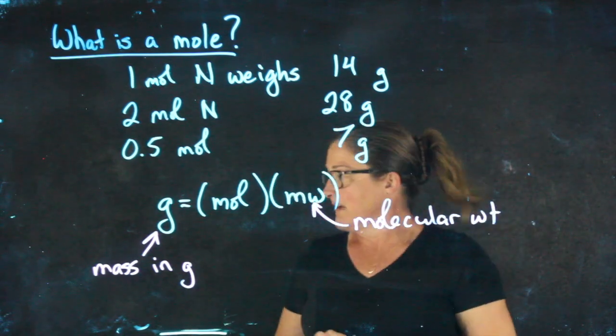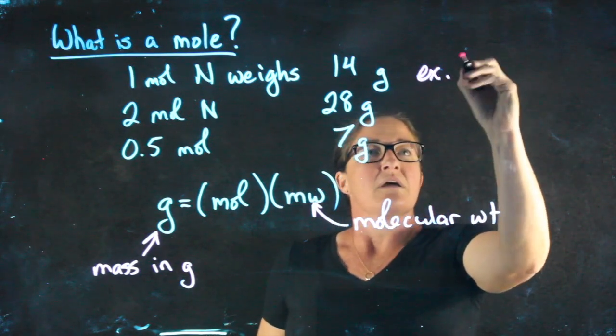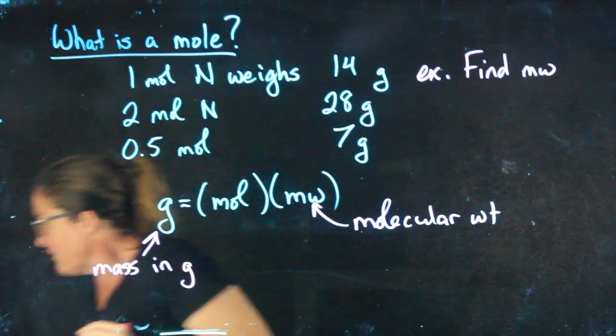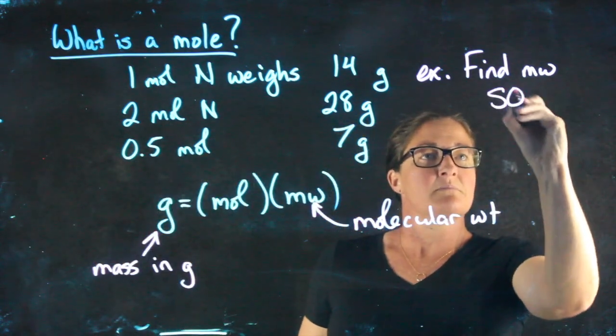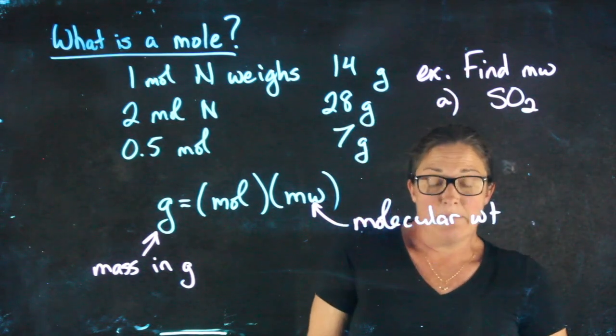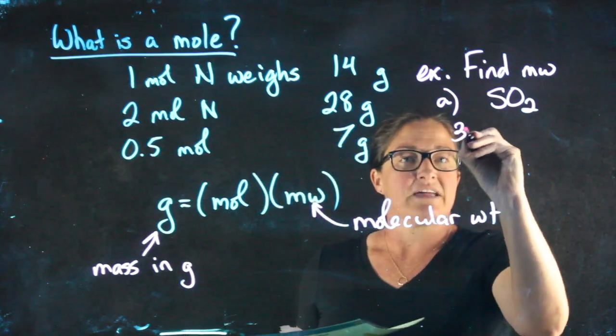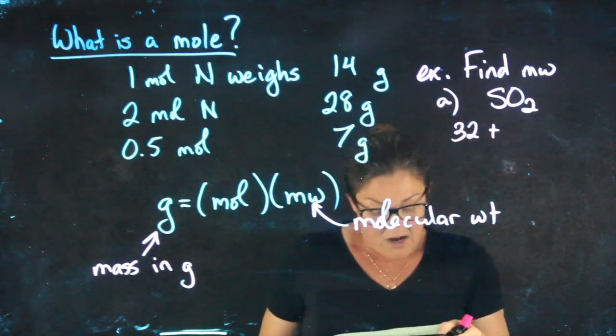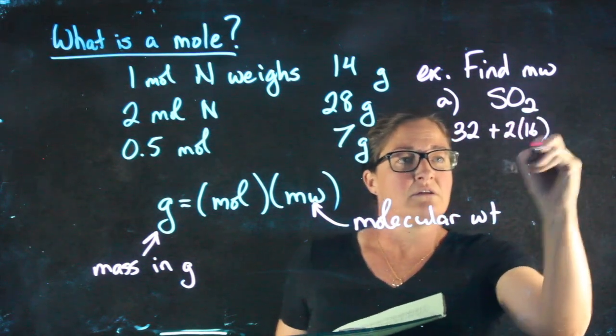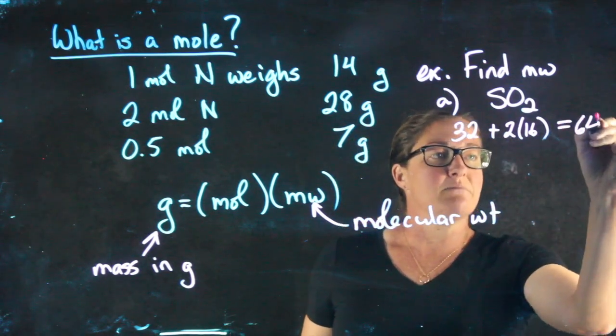We need to look at some molecular weights for things that are not pure elements, like if I had a compound. So for example, if I wanted you to find the molecular weight of a compound like SO2, we would need to find the individuals and add them up. When I find sulfur on the periodic table, it's right underneath oxygen. I see that it has a molecular weight of 32. Oxygen has a molecular weight of 16, but I have two oxygens. So since I have two oxygens, I need to double that value. And when we add this up, we get a molecular weight of 64.